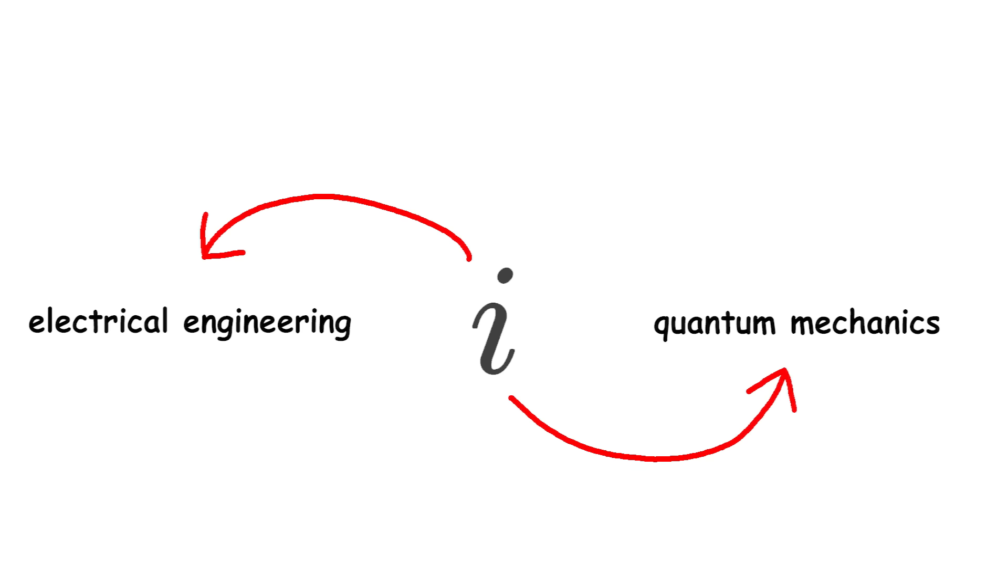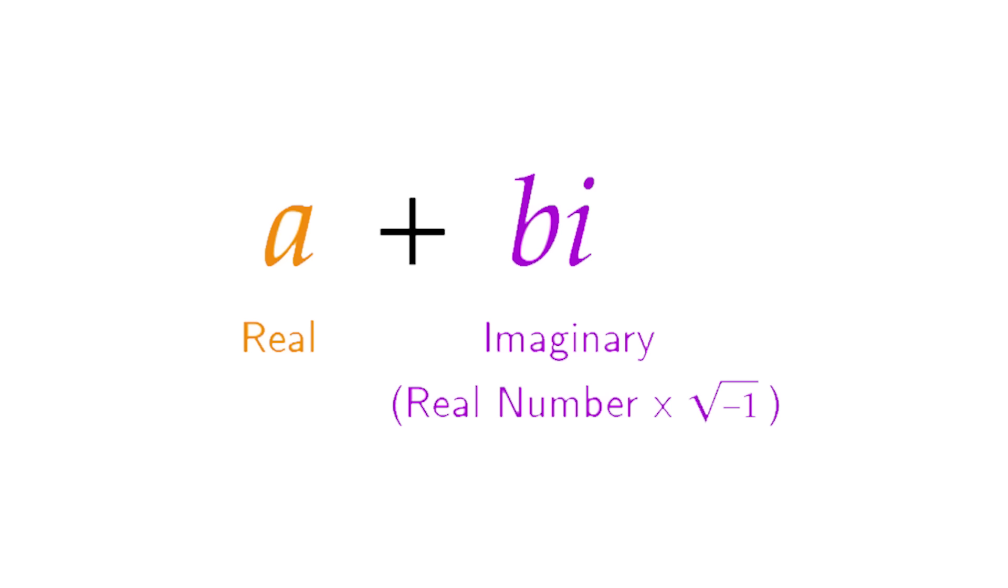Complex numbers that include the imaginary unit i are written in the formula A plus Bi, where A is the real part and B is the imaginary part.